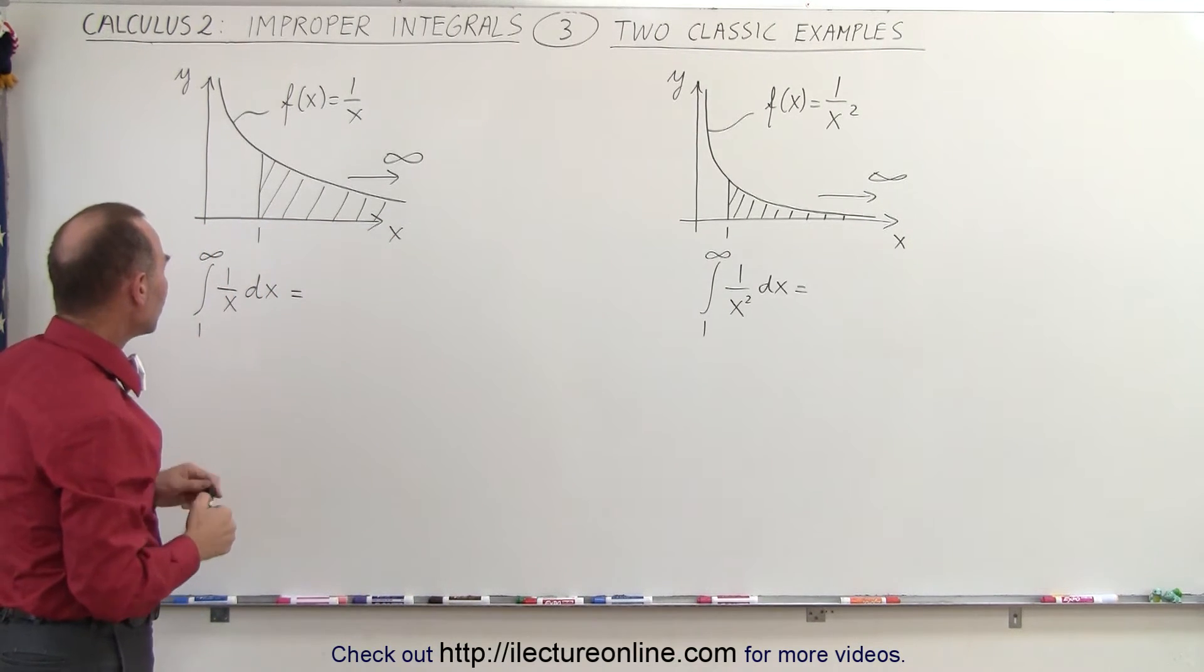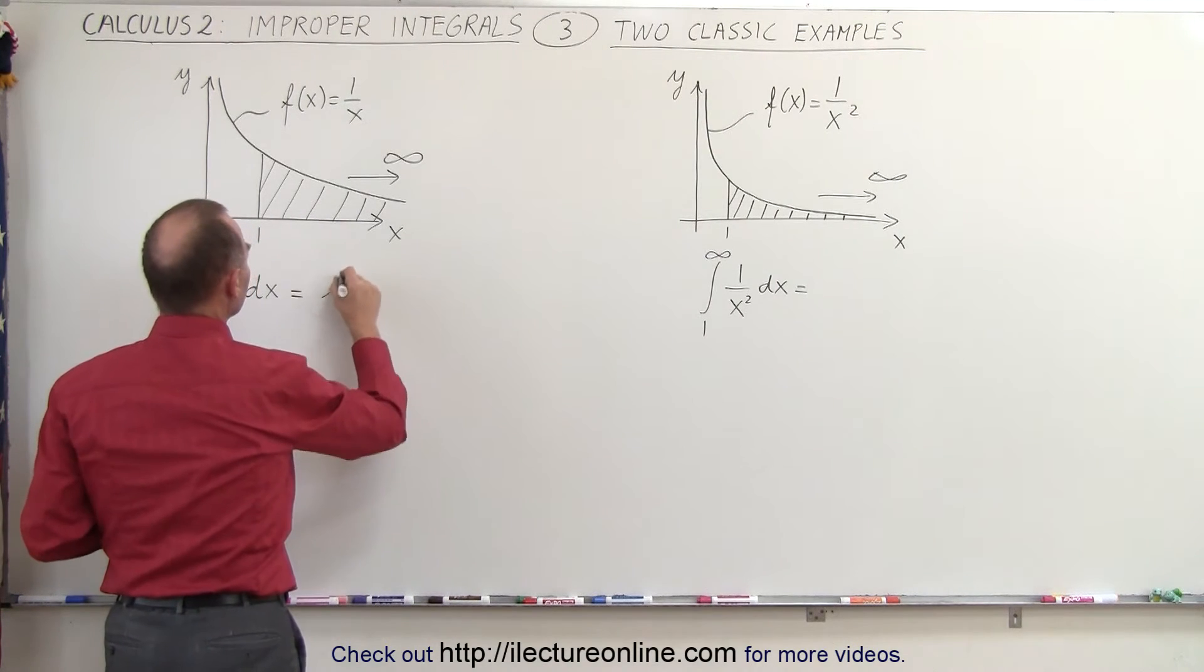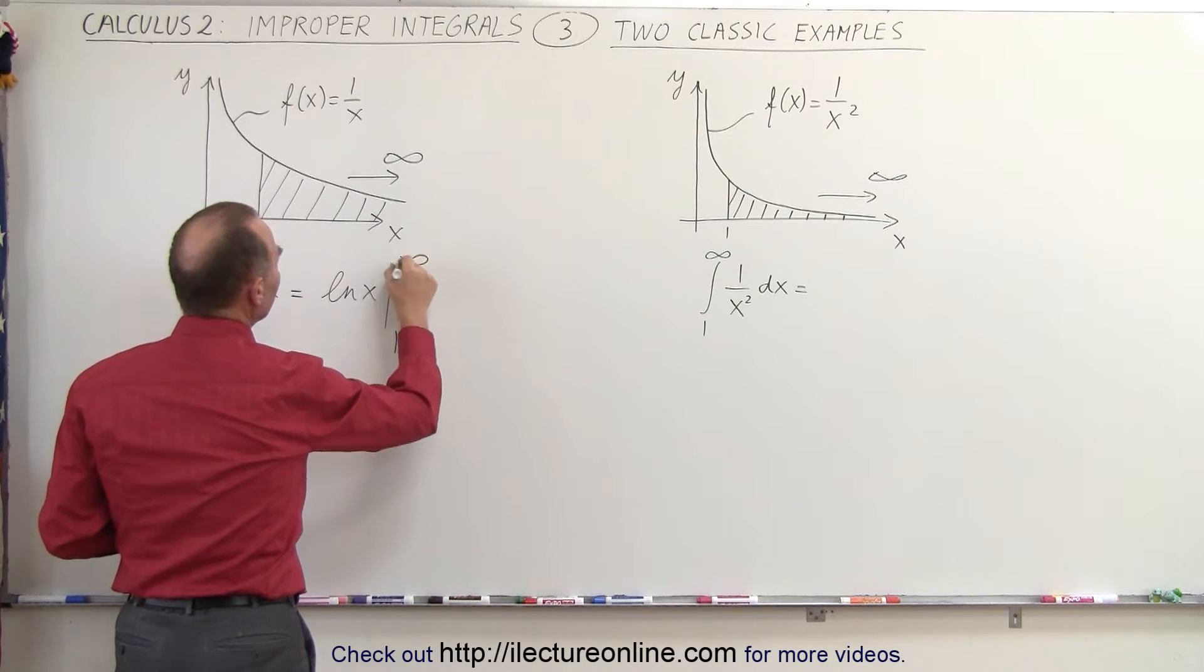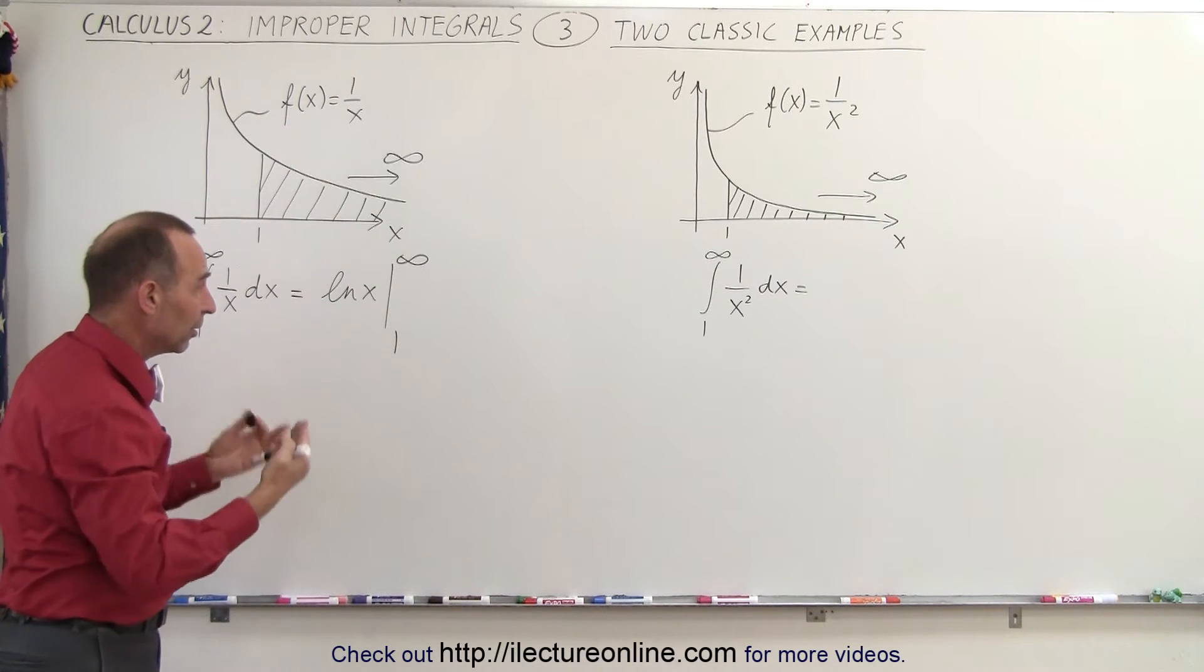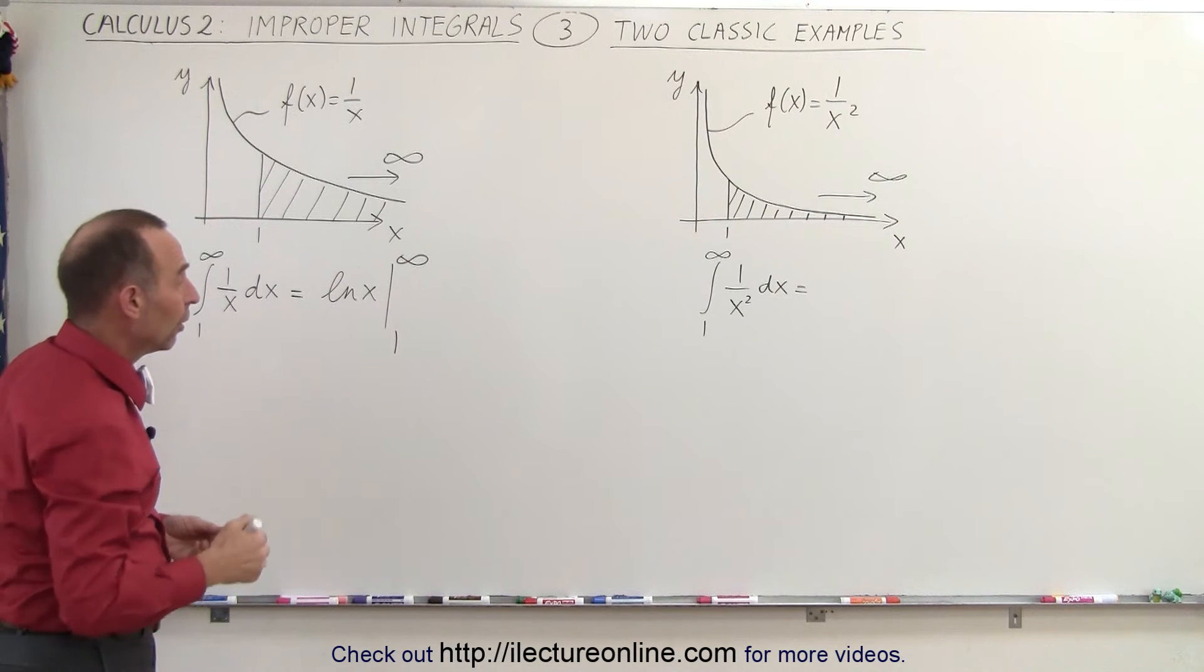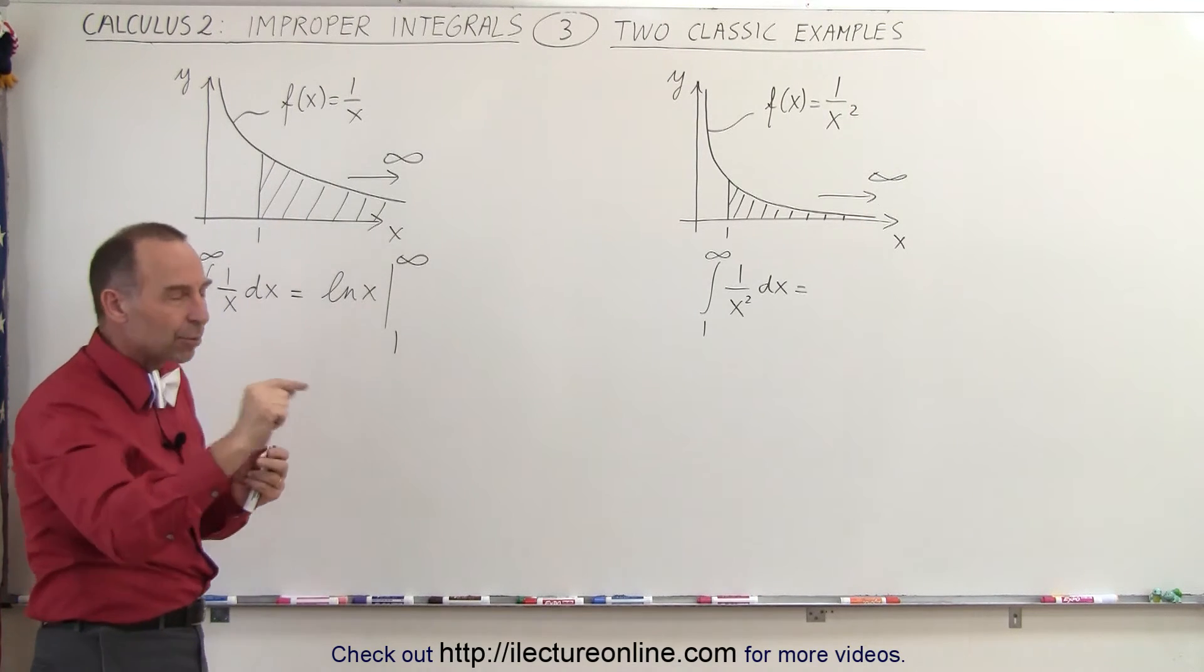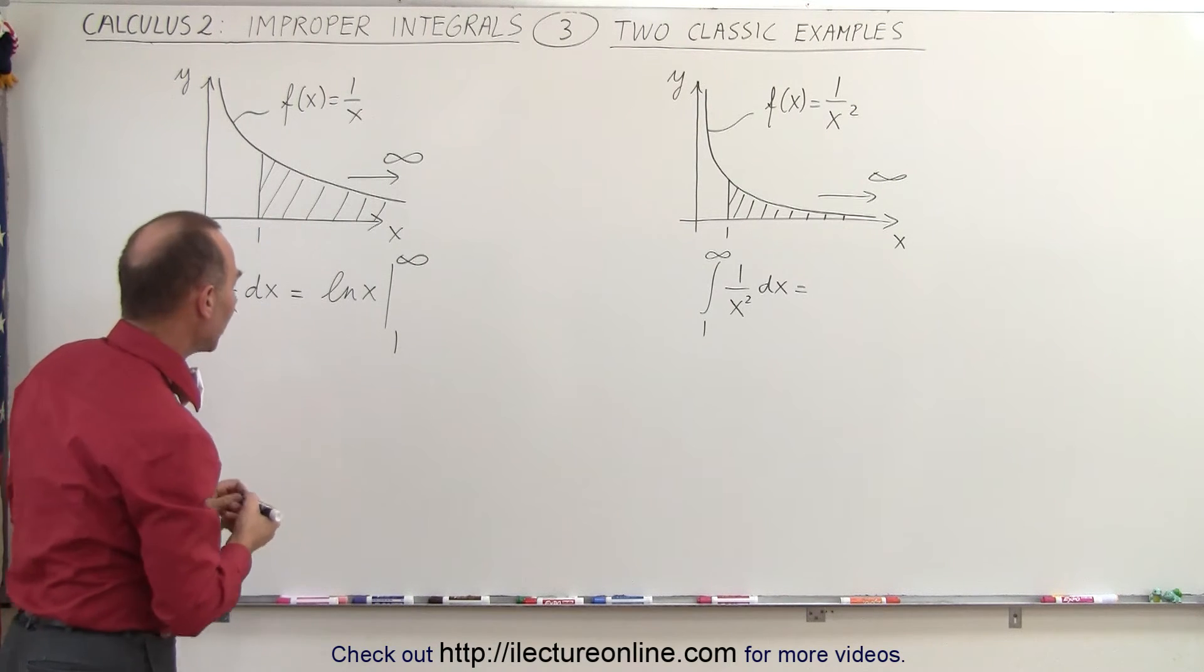If we integrate 1 over x dx, of course the integral of that is the natural log and we're going to evaluate that from 1 to infinity. In most cases we can actually plug in the final limits and we get a good value. Either it converges or doesn't converge and sometimes we'll have to use that definition where we take the limit as t approaches infinity before we can evaluate it. But in this case there's no problem.